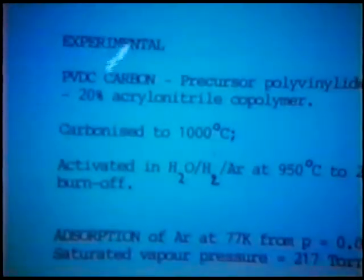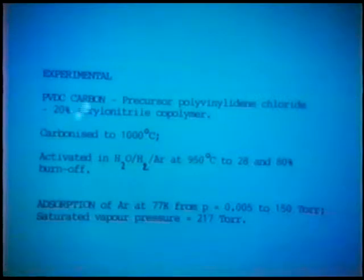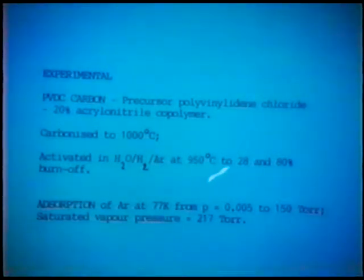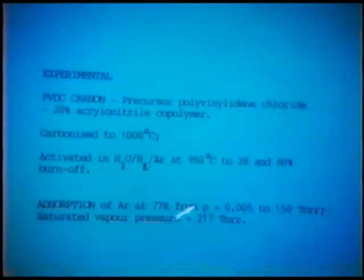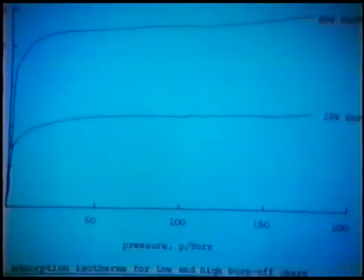Briefly on experimental: the material used was a PVDC carbon — the precursor was a copolymer of polyvinyl chloride and acrylonitrile — giving a carbon which is dominantly microporous. It was carbonized to 1,000°C and activated in steam-hydrogen with an argon carrier. The particular carbons I'll present results for are those activated at 28% burnoff and 80% burnoff. We measured adsorption of argon at 77K over a wide relative pressure range from 0.005 to 0.15. The adsorbent capacity of the 80% carbon is more than twice that of the 28% carbon.